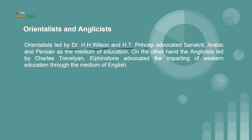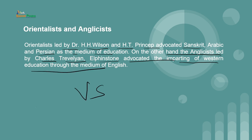On the other hand, Anglicists led by Charles Trevelyan and Elphinstone advocated the imparting of western education. This was like two concepts in controversy with each other — Anglicists advocating western education through the medium of English, and Orientalists mainly focused on bringing their culture and their language like Sanskrit, Arabic and Persian as their medium of instruction.